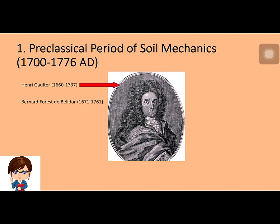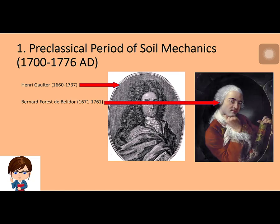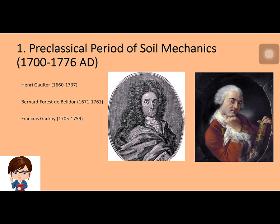Bernard Forrest de Bélidor (1671–1761) published a textbook in 1729 in France, proposing a theory of lateral earth pressure on retaining walls as a follow-up to Gautier's 1717 original study. François Gadroy (1705–1759), a French engineer, in 1746 reported the first laboratory model test results on retaining walls with sand. He also observed the existence of slip planes in the soil at failure. J.J. Mayniel in 1808 summarized Gadroy's study.